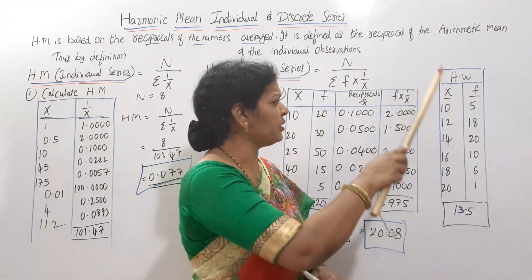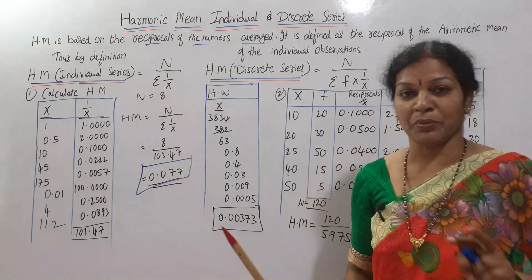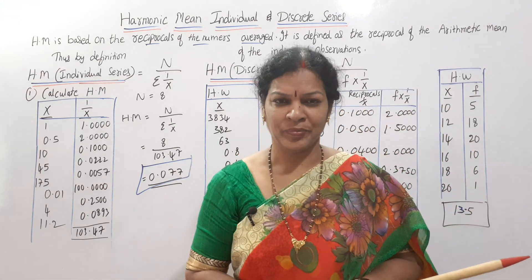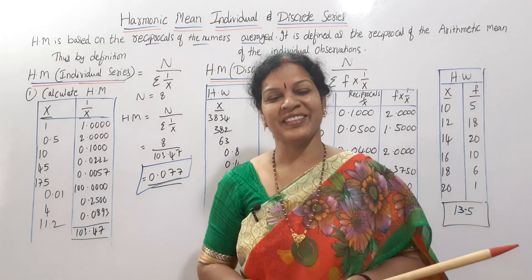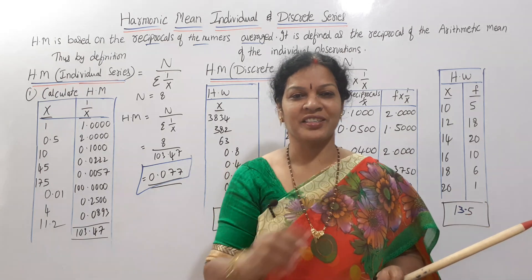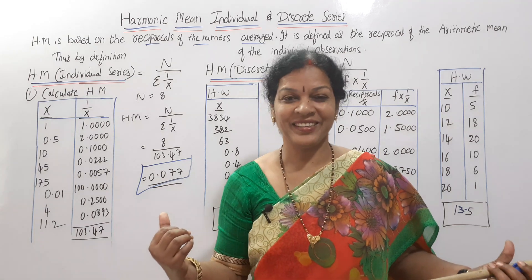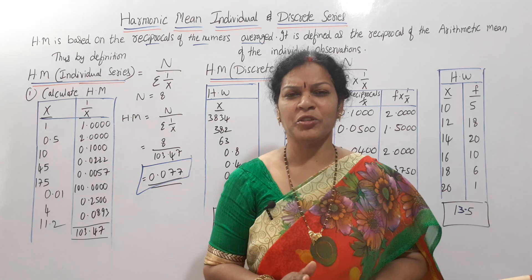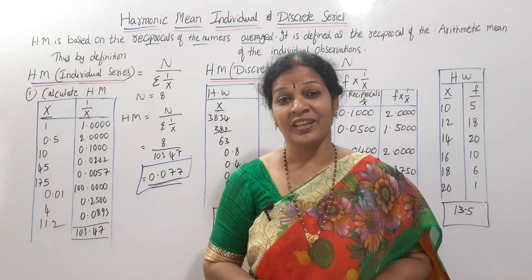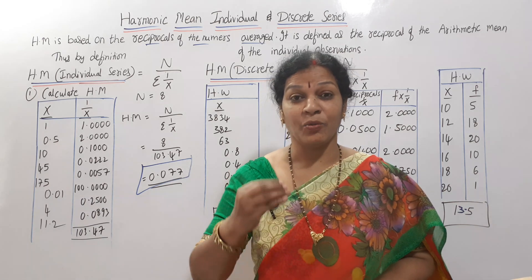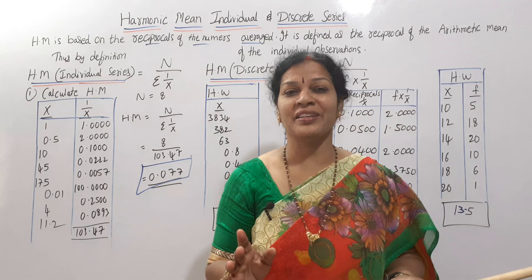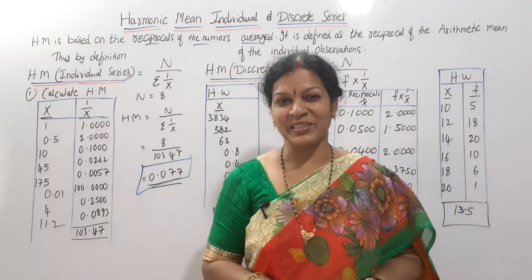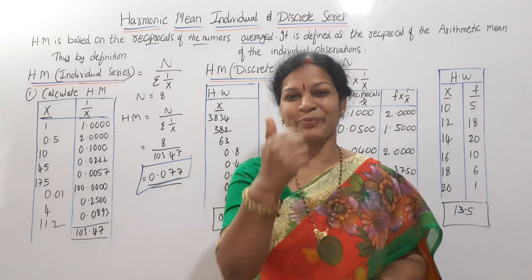Let me know how many of you are doing these homework problems — today you have 2 homework problems. How many of you are getting the correct answer? Let me know in the comment box. Harmonic mean — individual series and discrete series — is completed with homework. Next class we will see continuous series for harmonic mean. Stay connected. Check out the playlist and prepare well. Everything is free of cost. Don't hesitate to share these videos. Practice well. Have a bright career. Good luck.